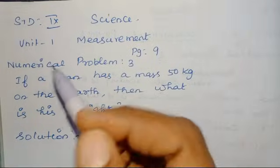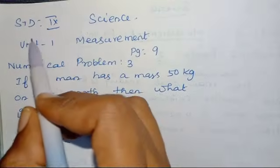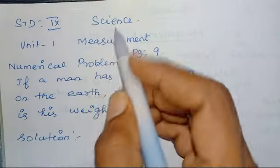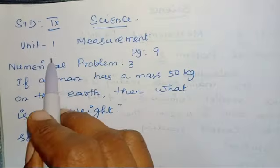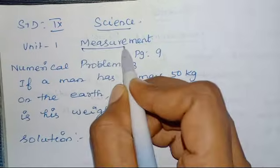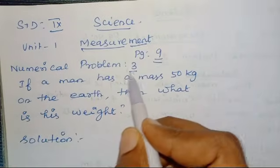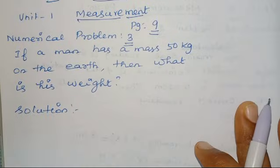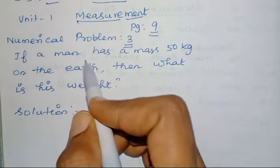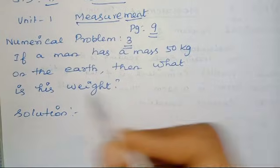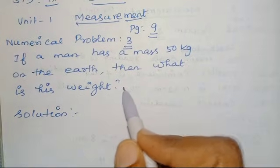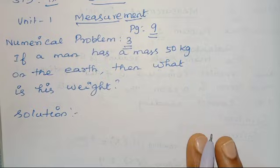Hello children, in this video we are going to learn about Standard 9th Science Unit No. 1, Measurement. It is on page No. 9, Numerical Problem 3. Let me move on to the problem. If a man has a mass of 50 kg on the earth, then what is his weight?